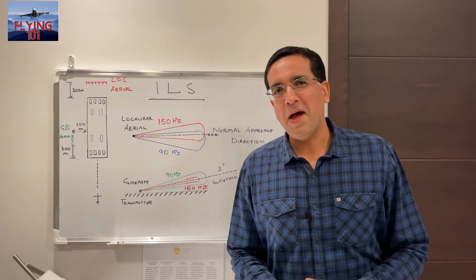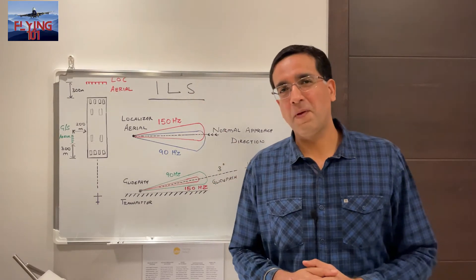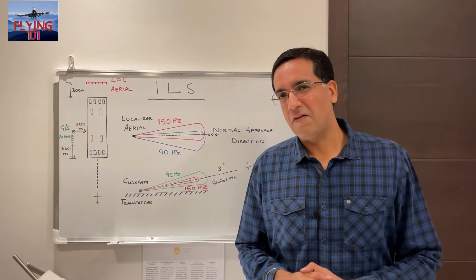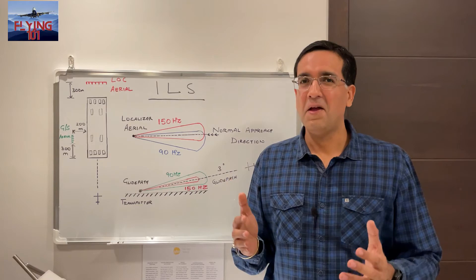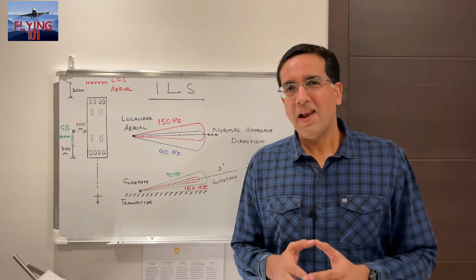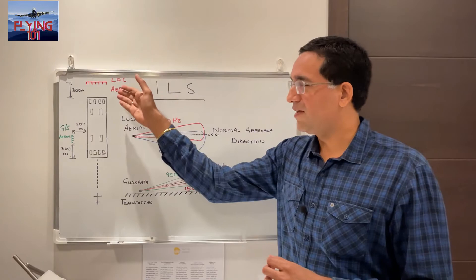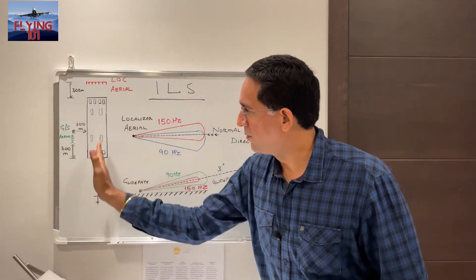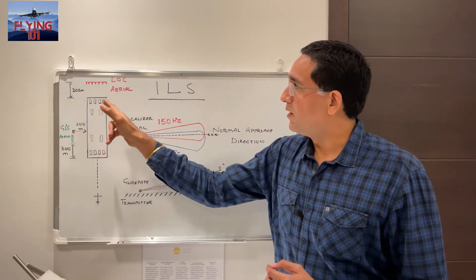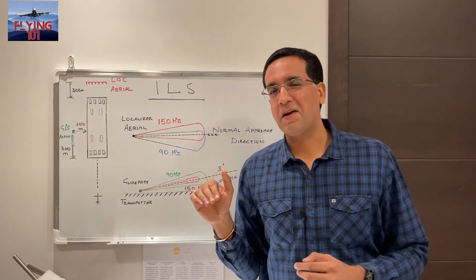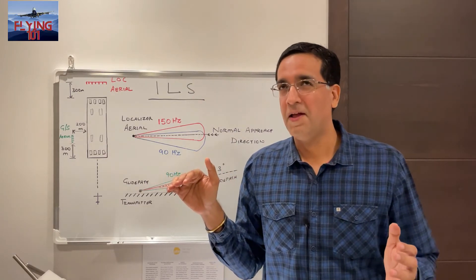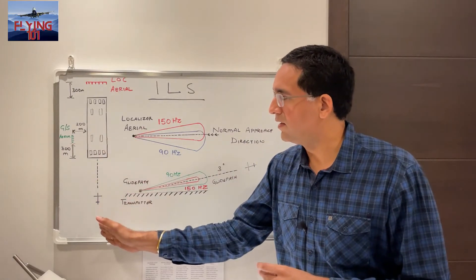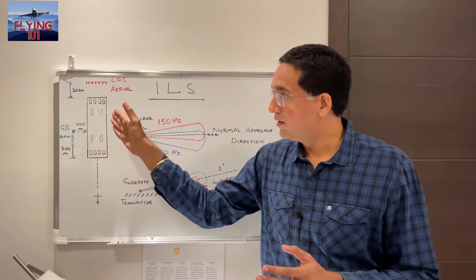Quick recap: ILS — Instrument Landing System — is a ground-based navigation aid providing guidance to an aircraft in both the vertical and horizontal planes to position it for landing. An ILS system comprises two transmitters. The localizer aerial is at the end of the runway on the upwind side, and its task is to provide guidance in the lateral or horizontal plane — telling pilots whether the aircraft is aligned with the extended runway centerline.